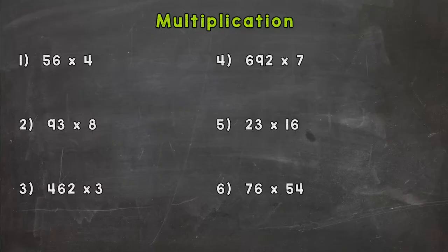So let's start with number one, and we have 56 times 4. We need to set it up like so. Now multiplication is nothing but repeated multiplication facts, so if you know your facts, the most important part is going to be the problem setup and lining everything up.